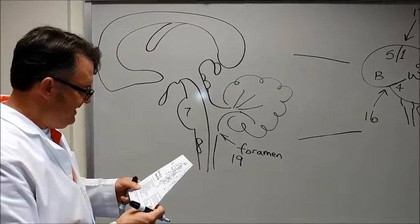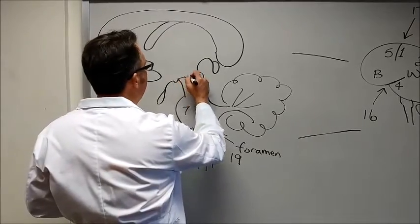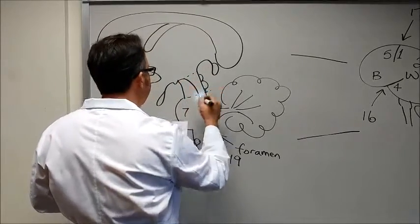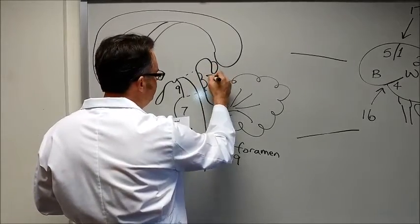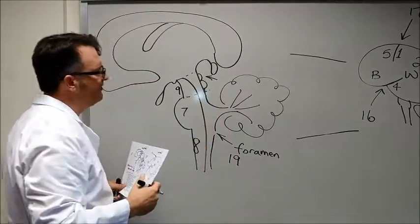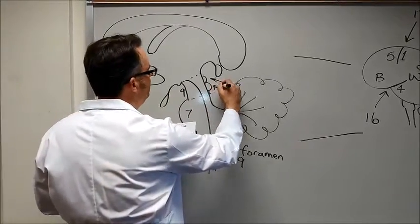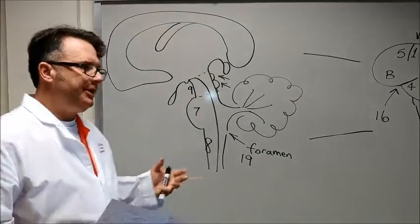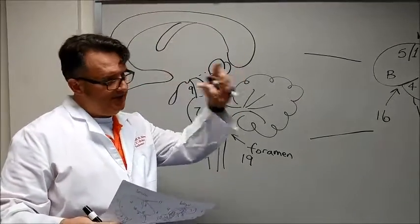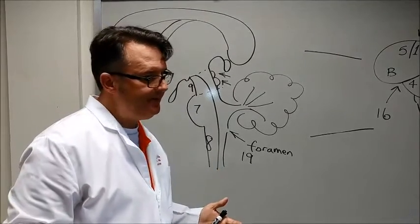Number nine. This area right in here is called the midbrain and this is including superior colliculi which are for visual processing and then the inferior colliculi for auditory processing. These collectively there are two humps top, two humps bottom. They are collectively called the corpora quadrigemina.